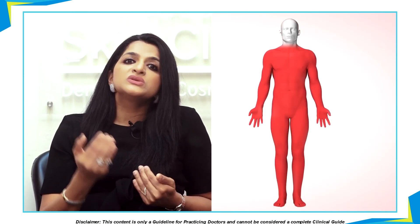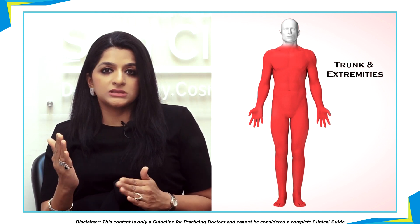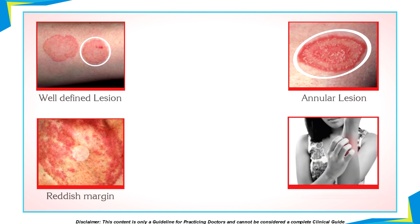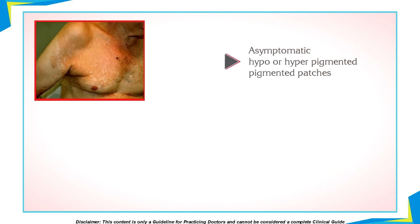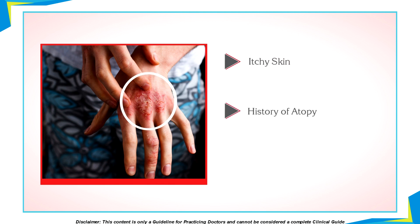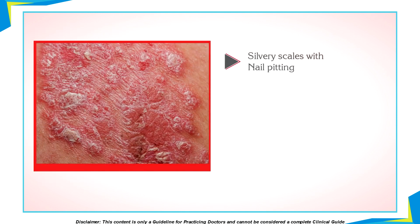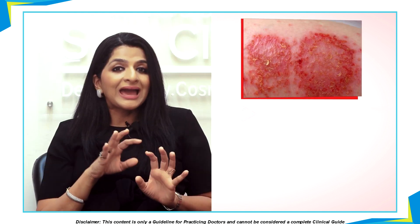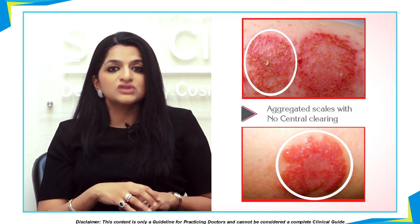Let us now see different types of lesions on the trunk and the extremities. When you see well-defined annular reddish margin lesions with well-defined borders, central clearance, and pruritus, then your diagnosis is that of tinea corporis. When you see asymptomatic hypopigmented or hyperpigmented patches on upper arms, chest, and back with itching, then it is a case of tinea versicolor. When you see itchy lesions along with a history of atopy and a lot of lichenification, then it is a case of atopic dermatitis. Silvery scales with nail pitting and lesions in other parts of the body with no history of itching, plus a past history of psoriasis, indicate psoriasis. Aggregated scales with no central clearing suggest nummular eczema.